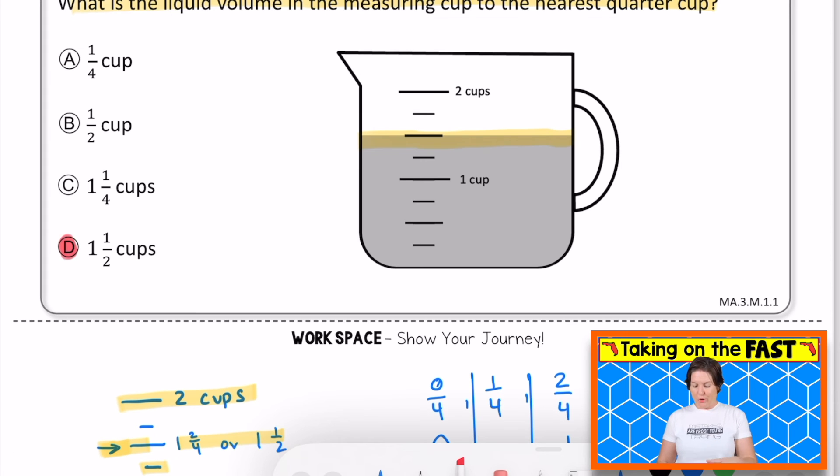A says one fourth of a cup. No. B says half of a cup. That's less. One and one fourth is close, but one and a half is our correct answer there. It's halfway. It's exactly halfway between one cup and two cups. So it's one and a half cups. Pause the video to jot down any notes that you still need to make, and when you're ready, press play.